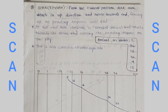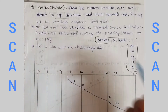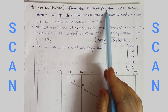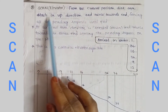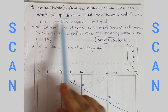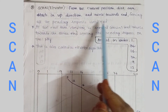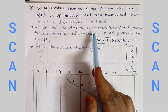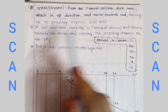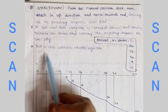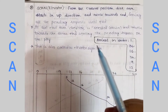Hello Techies! This is the SCAN algorithm — SCAN Disk Scheduling algorithm. From the current position, the disk arm starts in the up direction and moves towards the end, serving all the pending requests until the end. At the end, the arm direction is reversed and moves towards the other end, solving the pending requests on the way. This is also called the Elevator algorithm.